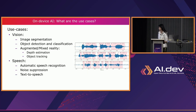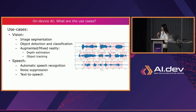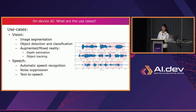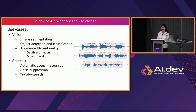For speech models, automatic speech recognition is one of the most common, converting audio to text. There are other examples such as noise suppression, which is very often used in video calls to suppress background noise.